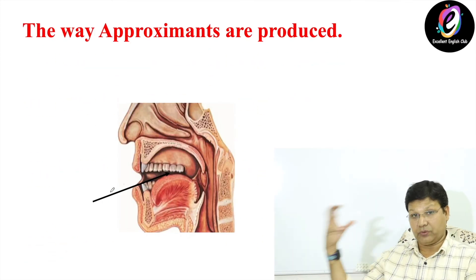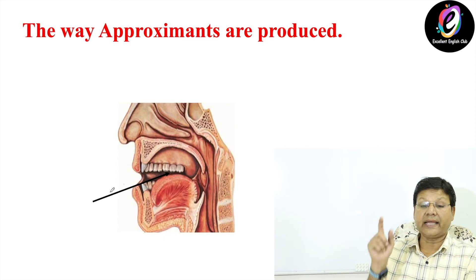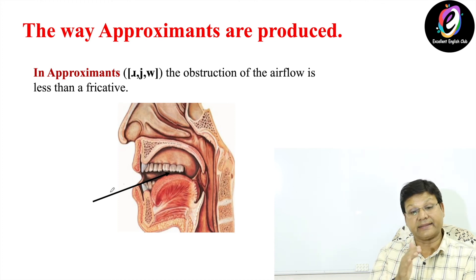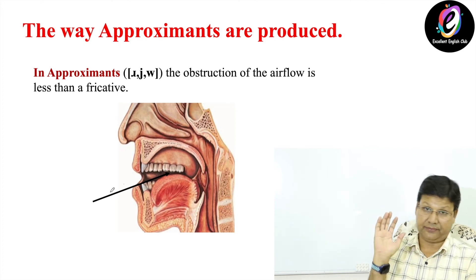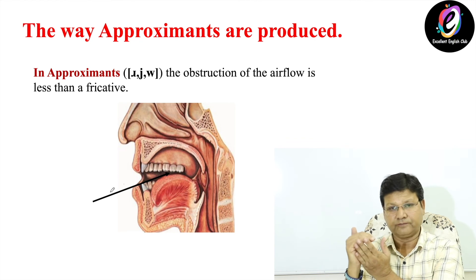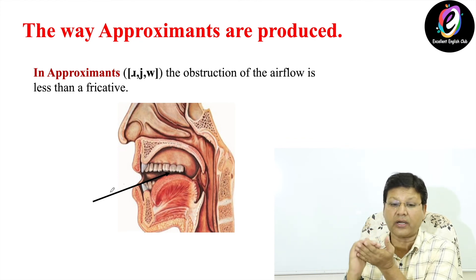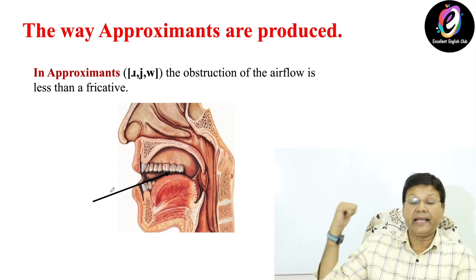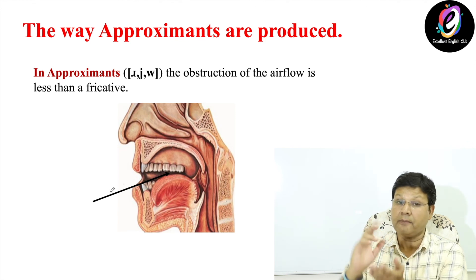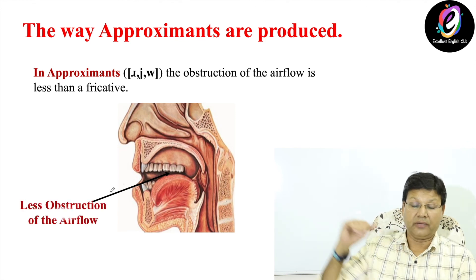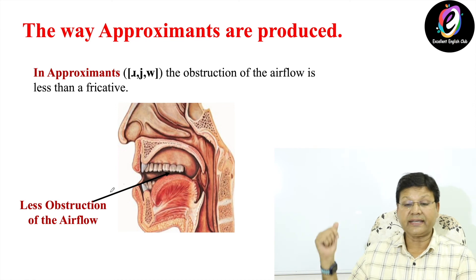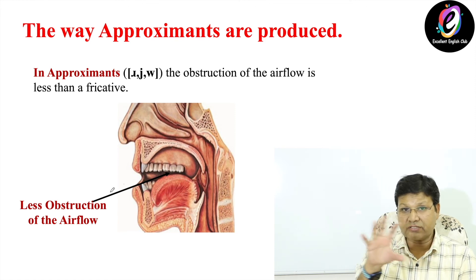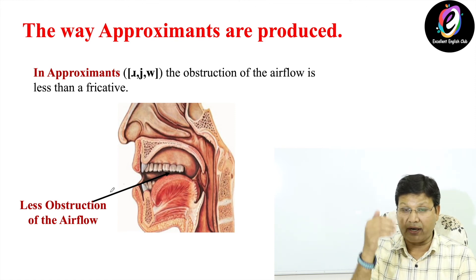Finally, the way approximants are produced — ra, ya, and wa. In approximants, the obstruction of the airflow is less than a fricative. There is no complete stop of airflow, but there is a narrowing or obstruction of the airflow — less than in fricatives. In the picture you can see there is less obstruction of airflow. This covers the manner of articulation.